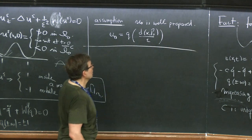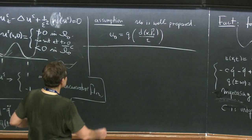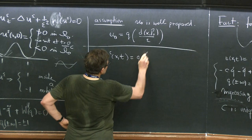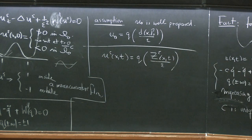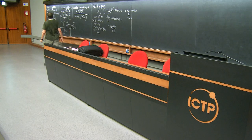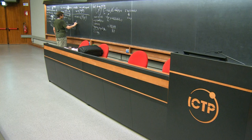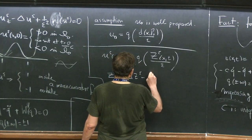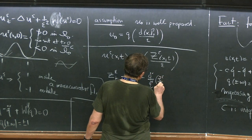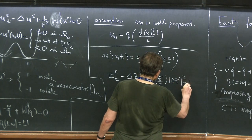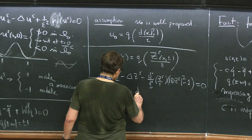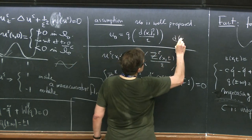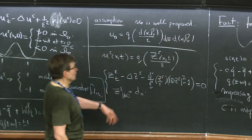With this assumption, let's see what we do. This assumption suggests that perhaps we should make a change of variables like Z epsilon equals Q inverse of U epsilon. You may think this is crazy. But once I show you the formal proof, you're going to see that that's exactly what the formal proof does. Now let's compute what Z epsilon does — the epsilon solves this equation.